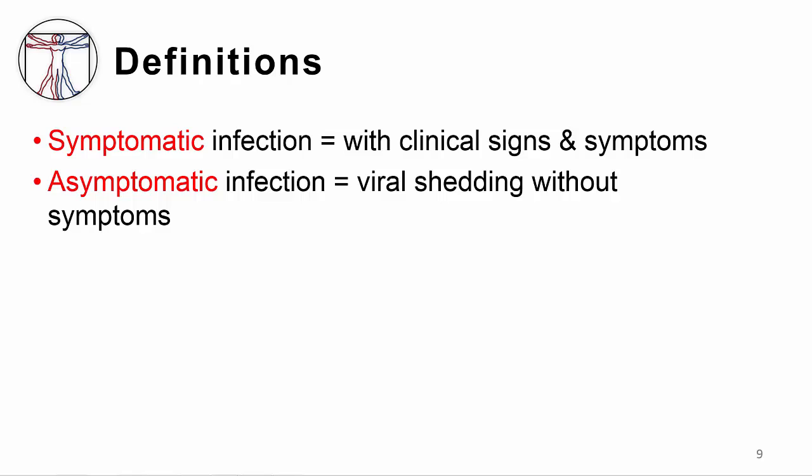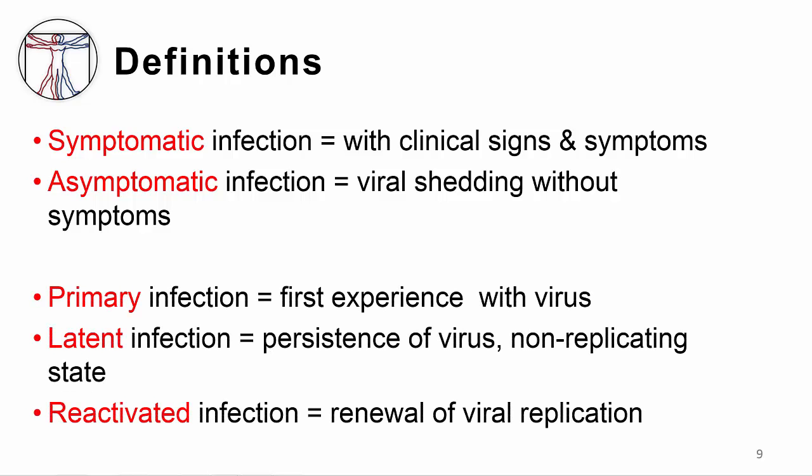These are important definitions describing different types of viral infection. Symptomatic infection occurs when a pathogen infects a patient who then develops symptoms such as fevers or a rash. Asymptomatic infection occurs when a pathogen infects a patient and there are no symptoms. For herpes virus infections specifically: primary infection is the first time a patient encounters the virus; latent infection is persistence of the virus without replication, usually with no symptoms; and reactivation is renewed viral replication, often accompanied by symptoms.